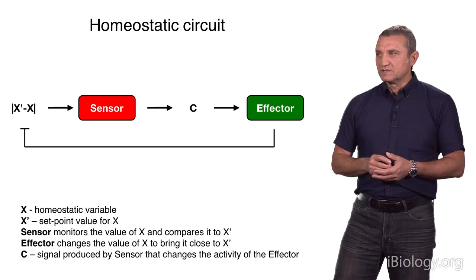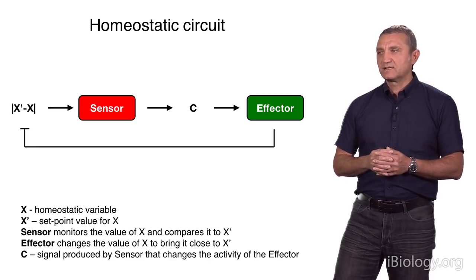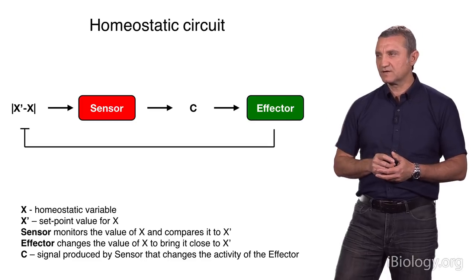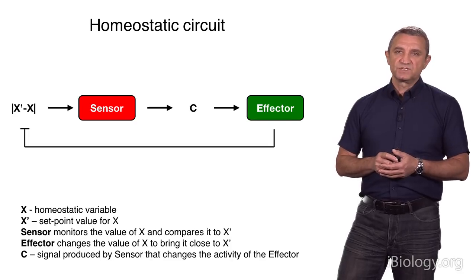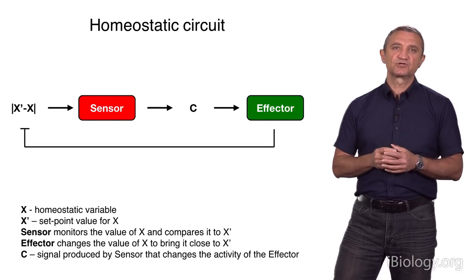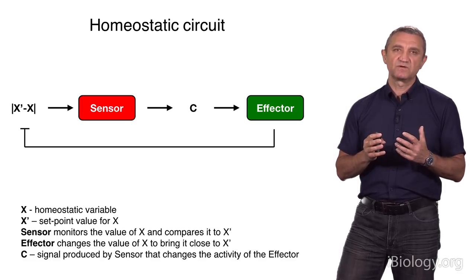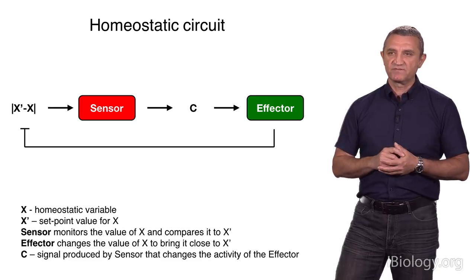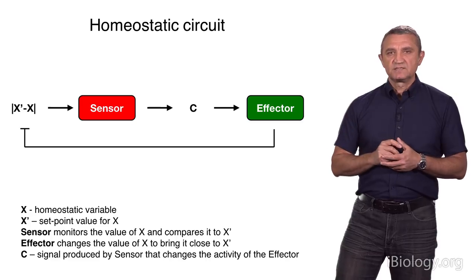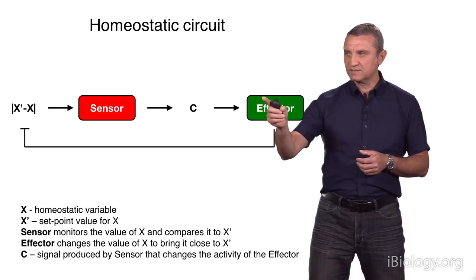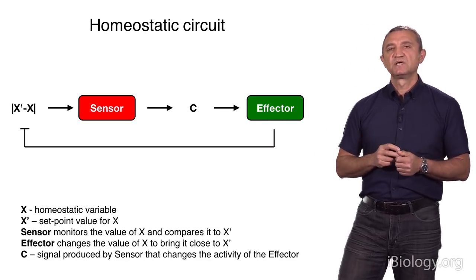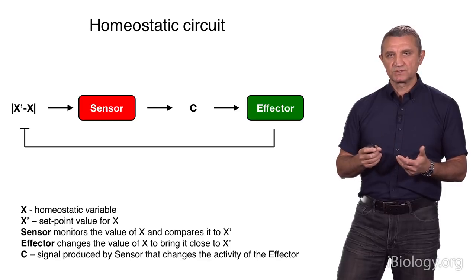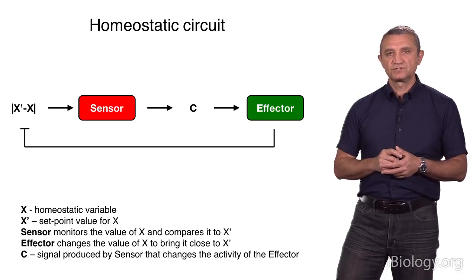The second essential part of the system is the effector part — the part that can change that value. So the sensor monitors the value, the effector can change the value, and they communicate through a signal denoted as C. For example, in systemic homeostasis of blood glucose, X would be the actual concentration of glucose in the blood, X prime would be the set point value — about 5 millimolar in humans. The sensors would be pancreatic alpha and beta cells. After you eat, glucose level goes up; beta cells in the pancreas detect that and start producing insulin, which acts on its effectors — skeletal muscle, fat, and liver — to lower blood glucose level by inducing uptake into those tissues or conversion into glycogen or lipids.